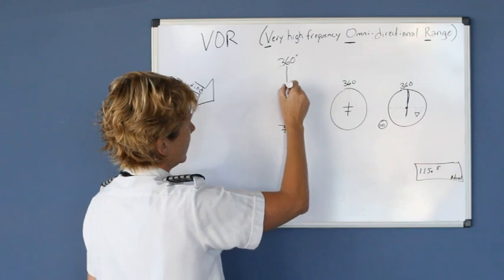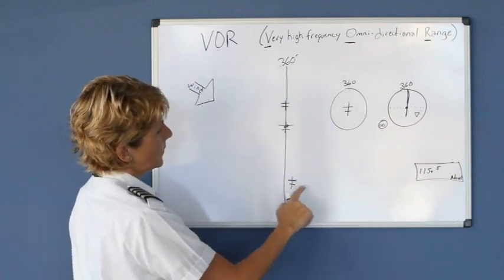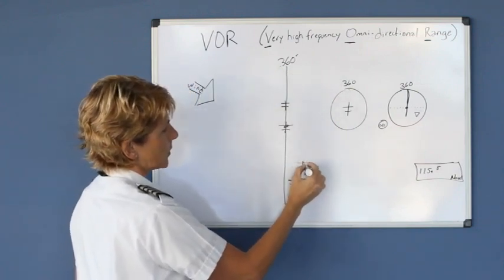So your real course is a line that looks straight like this, but while you were flying the wind blew you off course like this.